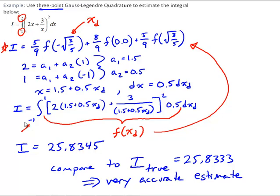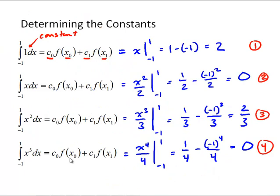Just to be clear, the approach discussed in this video is the Gauss-Legendre approach to quadrature. Gauss quadrature in general refers to the basic idea of strategically using a linear combination of function evaluations to approximate an integral. You can use other strategies besides developing the four constraints based on exact integrals — there are alternative approaches to developing those constants. You should be aware of those alternatives and pay attention whenever you're using a Gauss quadrature formula.